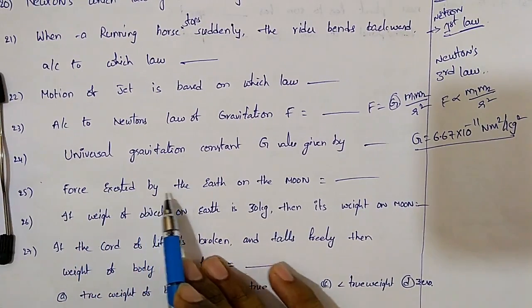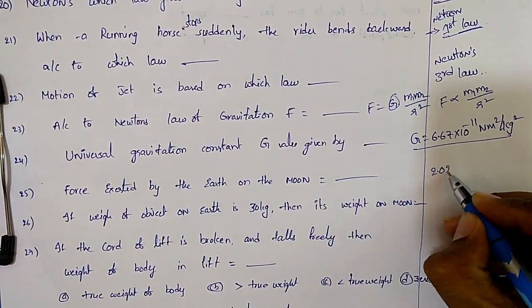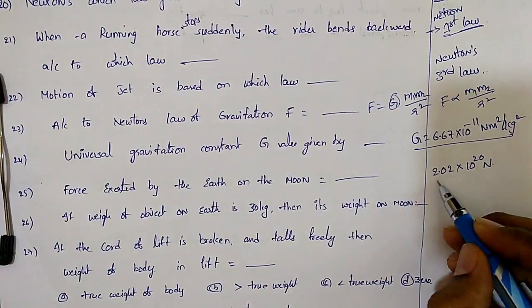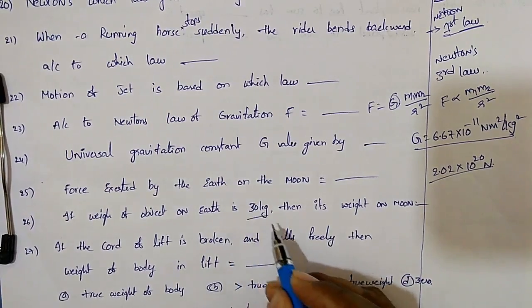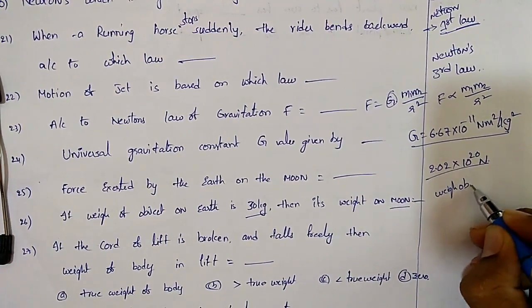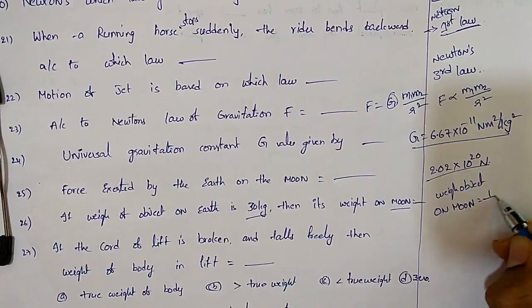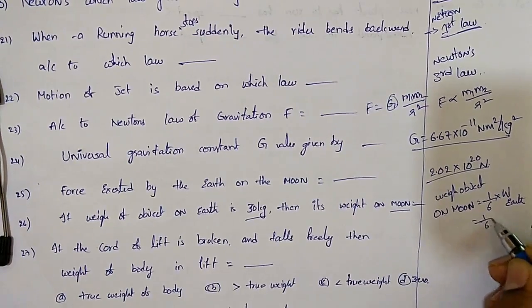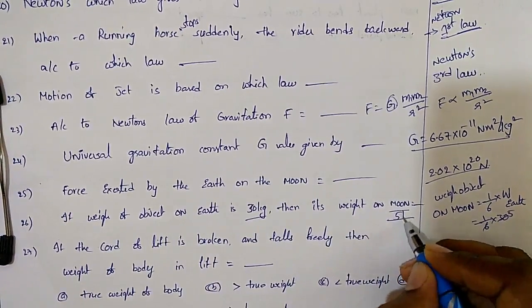The force exerted by the earth on the moon is 2.02 × 10 to the power of 20 Newtons. If the weight of an object on earth is 30 kg, then the weight on the moon is one-sixth of 30, which equals 5 kg.